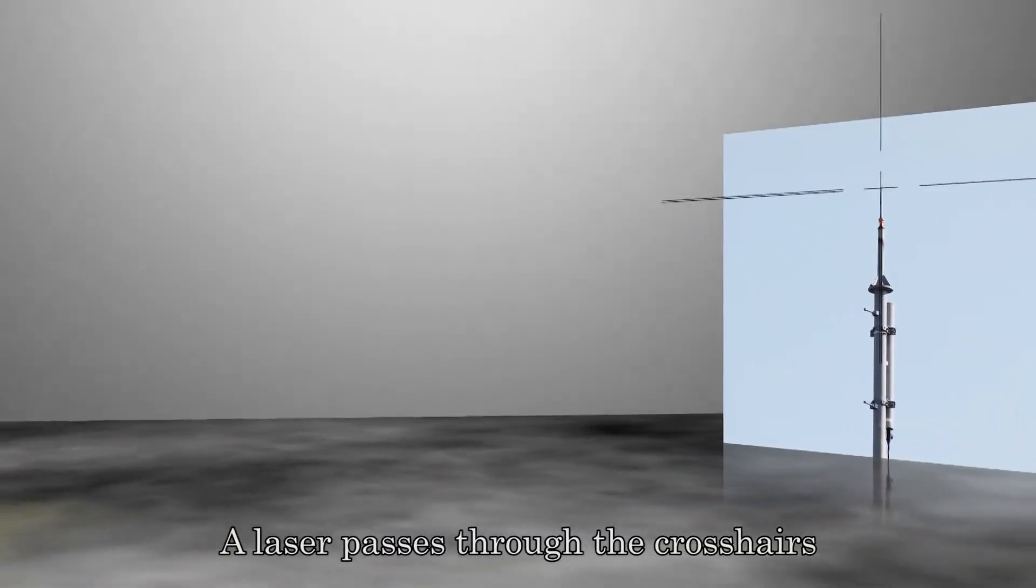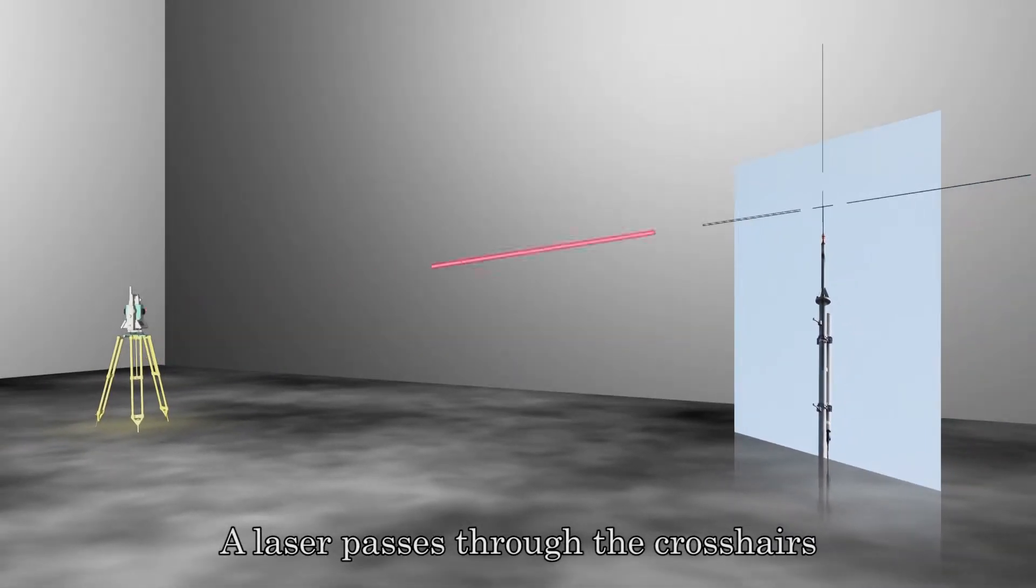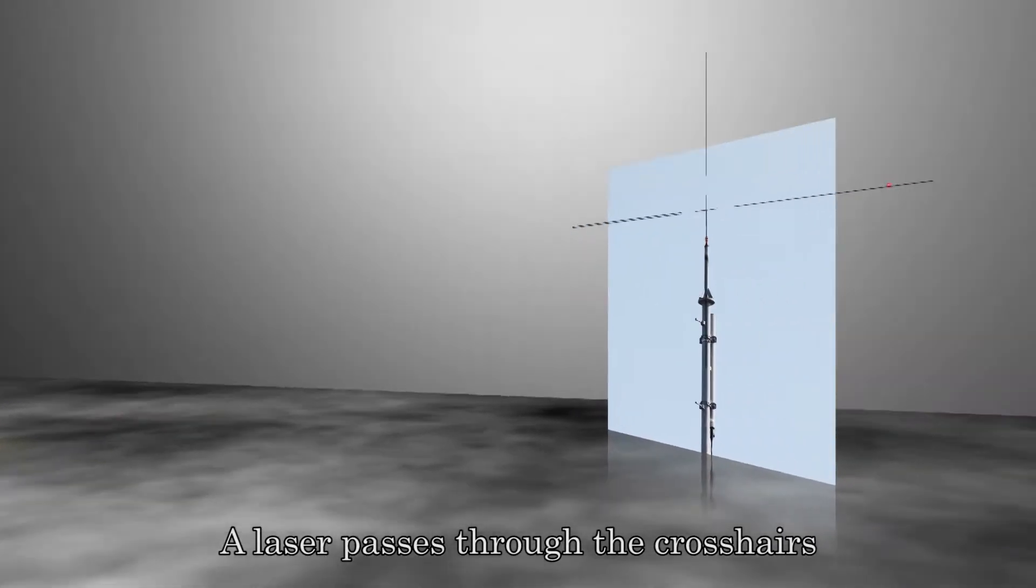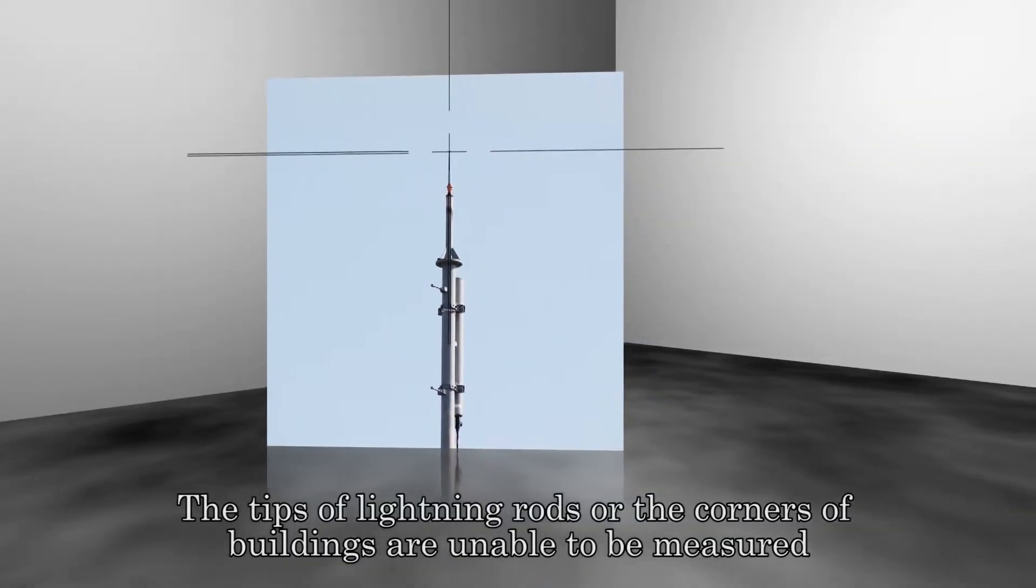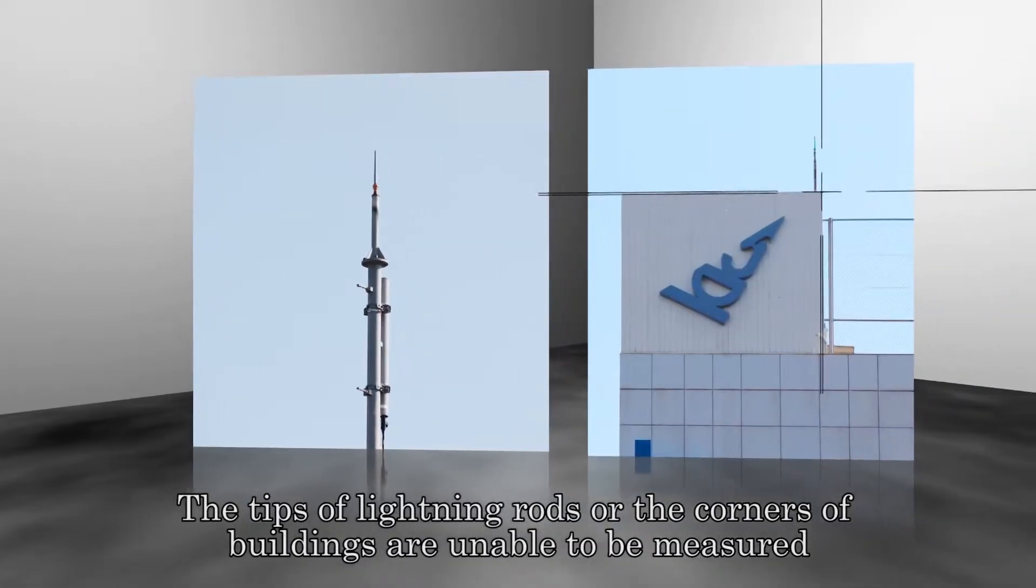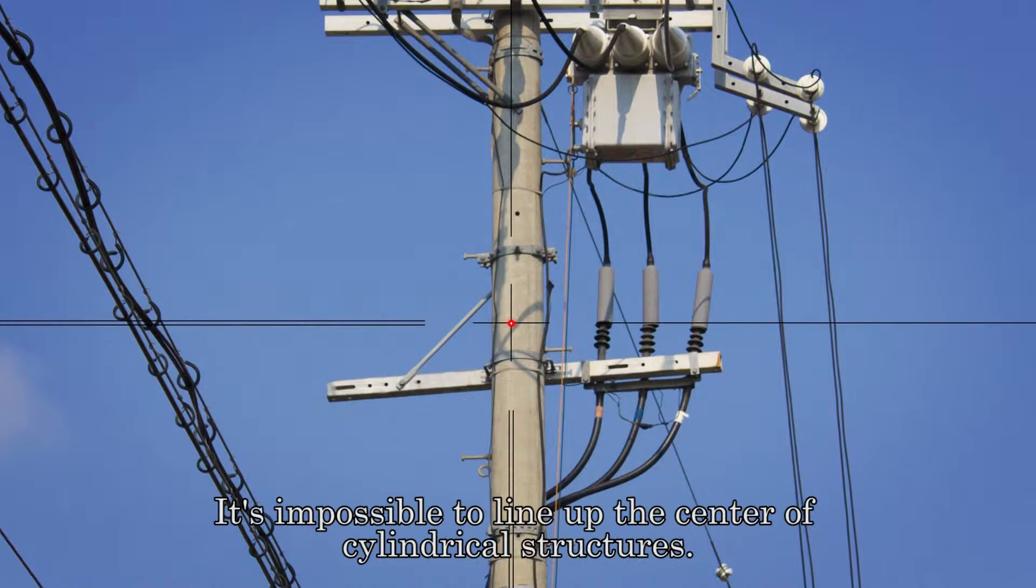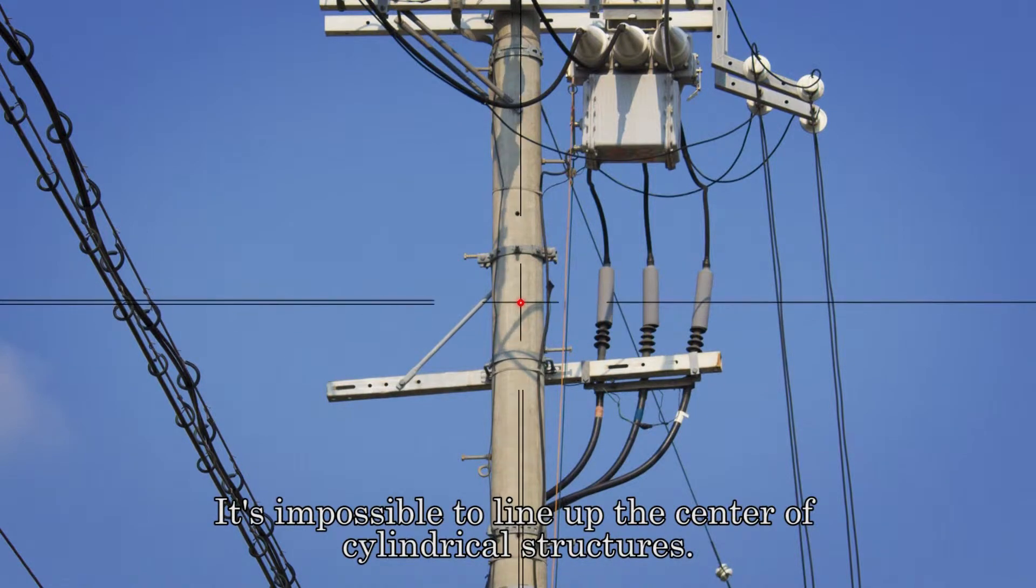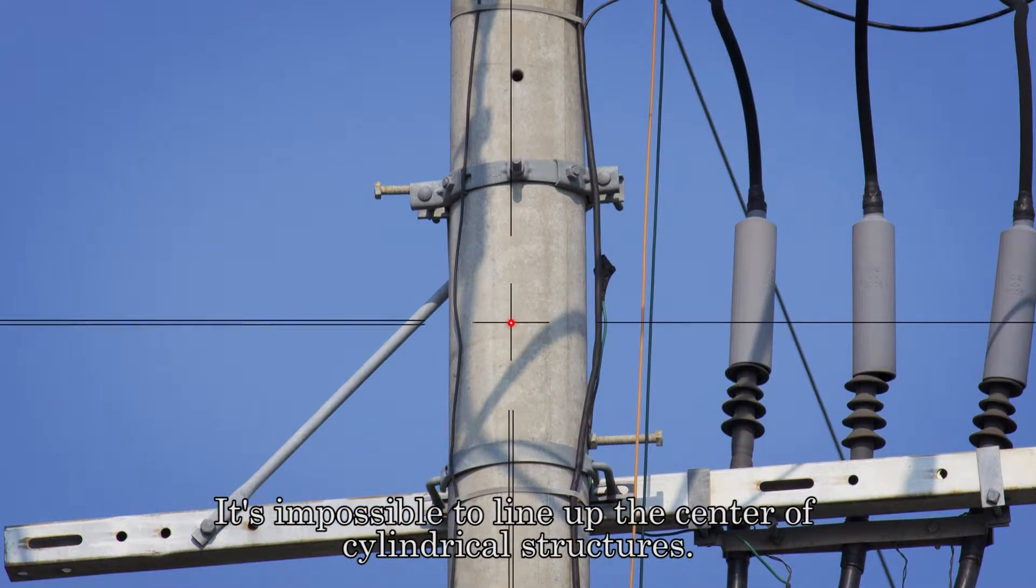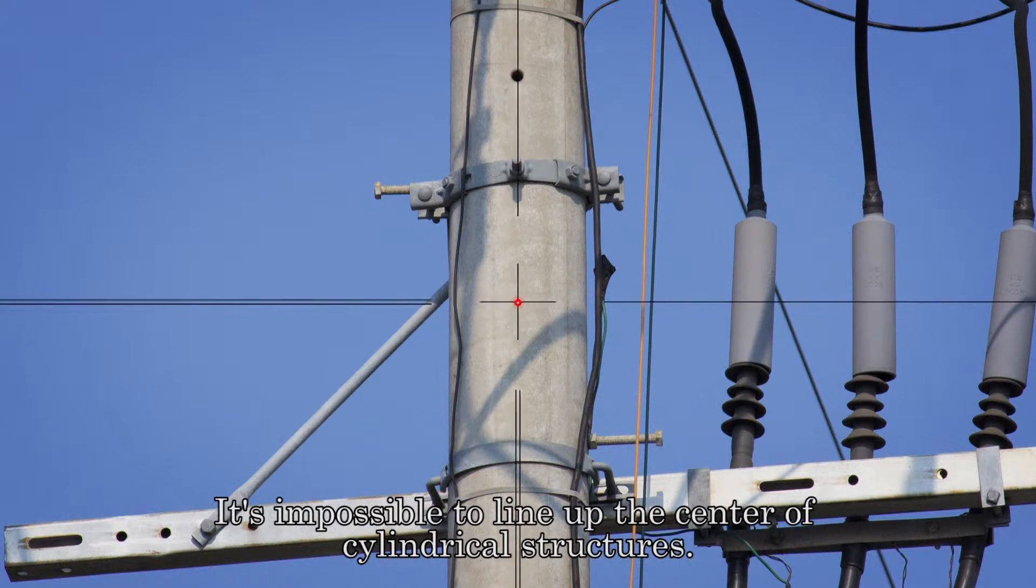Existing traditional total stations have lasers which pass through the crosshairs. However, they are unable to measure the tips of lightning rods or the corners of buildings. If there are no marks or distinguishing features on the target object, such as a telephone pole, it is impossible to line up the center.